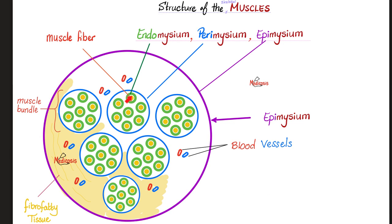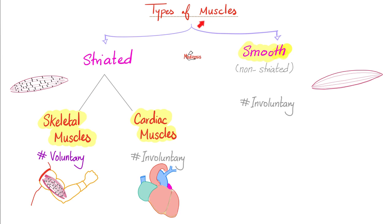The muscle fiber is surrounded by endomysium. Then we make a bundle surrounded by perimysium. Then the whole muscle is surrounded by epimysium. These three are connective tissue, but the muscle fiber itself is muscle tissue. What are the types of muscles in your body? We have three types: skeletal, cardiac, and smooth.